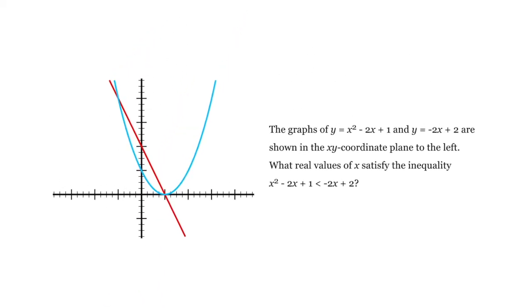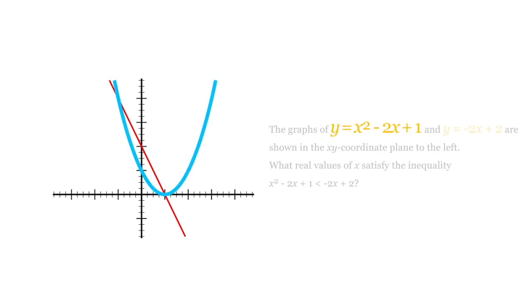Well, first of all, we have to figure out which of these two is the parabola and which of these two is the line. And you should know that if you see an x squared, that means it's a parabola. So this equation is represented by this line and this equation is represented by this line.